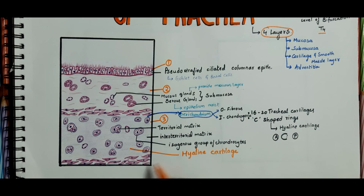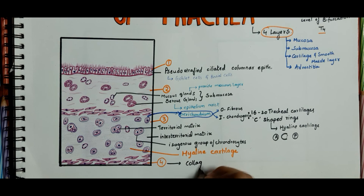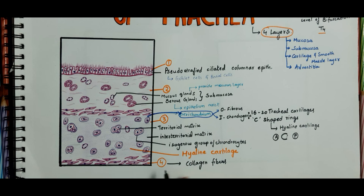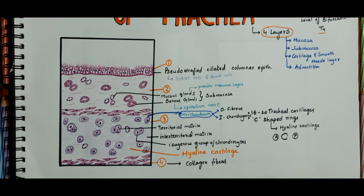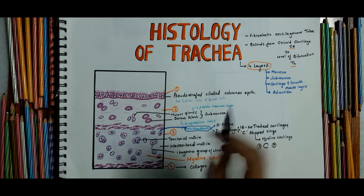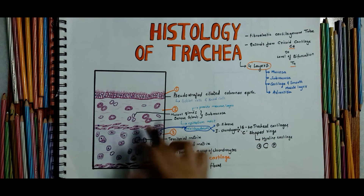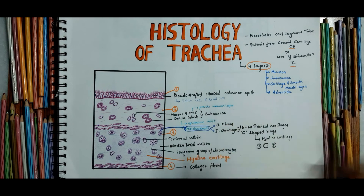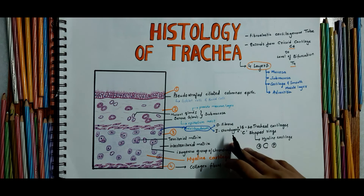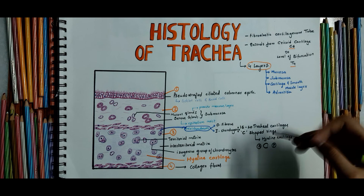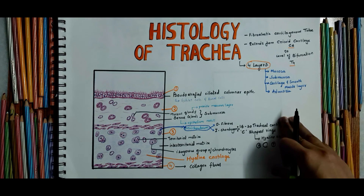Coming to the fourth layer — the adventitia. The adventitia consists of collagen fibers, connective tissue, blood vessels, and nerves. So guys, this is all about the histology of the trachea. Hope you liked the video; if you did, please subscribe to my channel.